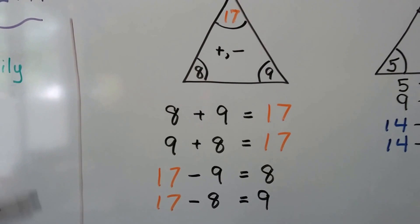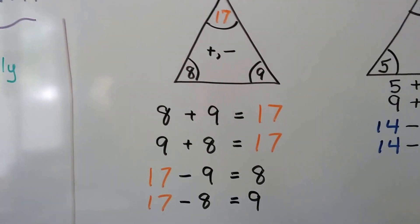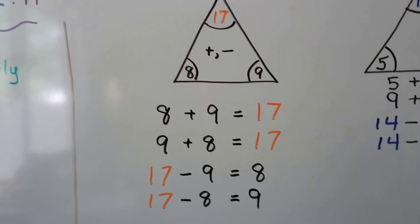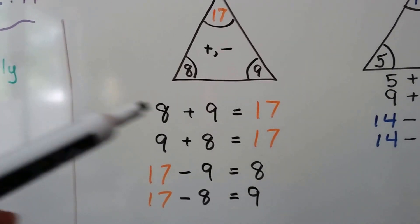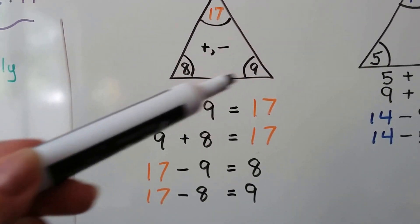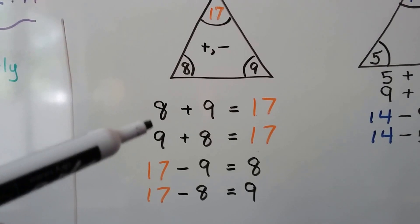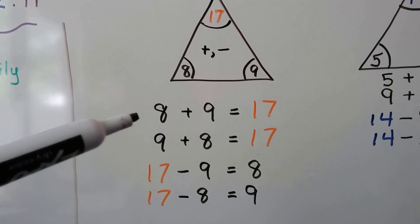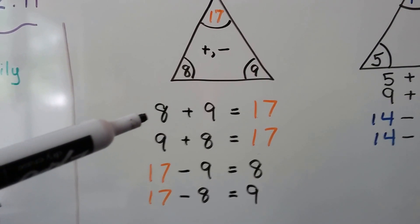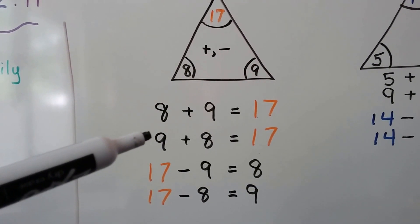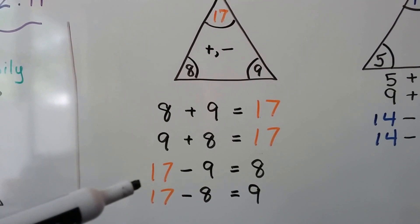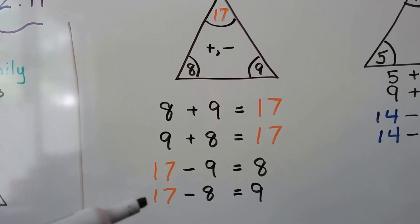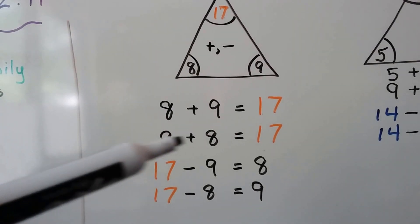We have a 17 on top, so we know that's going to be our sum or our minuend. We've got an 8 and a 9 — those are going to be our addends. So we have 8 plus 9 equals 17, or 9 plus 8 equals 17. For the subtraction sentences, we have 17 minus 9 equals 8, or 17 minus 8 equals 9.